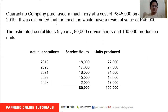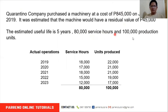We are still using Quarantino Company as our example — the same cost of $845,000, residual value of $45,000, and a useful life of 5 years. The service hours and units to be produced will not be needed anymore. The asset is still purchased January 1, 2019.